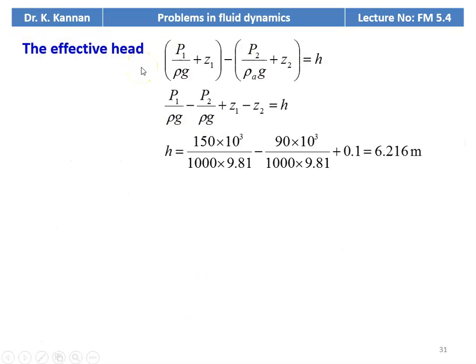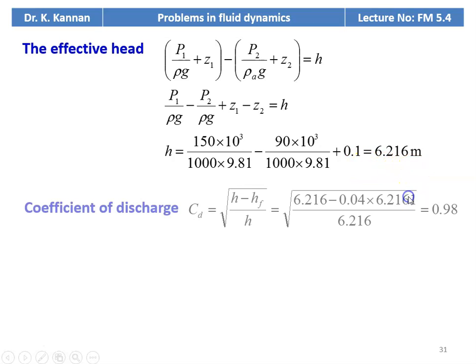The effective head is calculated from the pressure values and datum position: H = P1/ρG + Z1 − P2/ρG − Z2. Substituting P1/ρG − P2/ρG plus Z1 − Z2, with Z1 − Z2 equal to 0.1, gives H = 6.216 meters. The coefficient of discharge: since head loss is 4 percent, CD = √((H − HF) / H) = √((6.216 − 0.04 × 6.216) / 6.216) = 0.98.